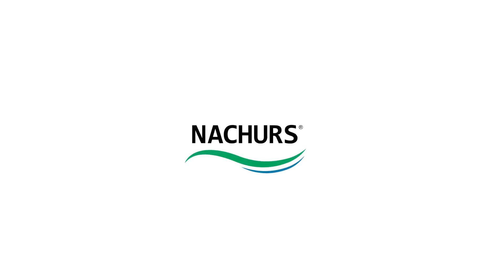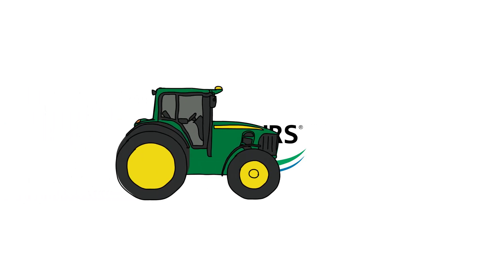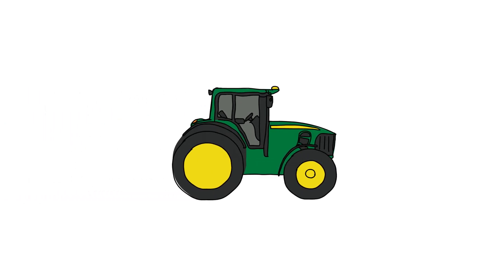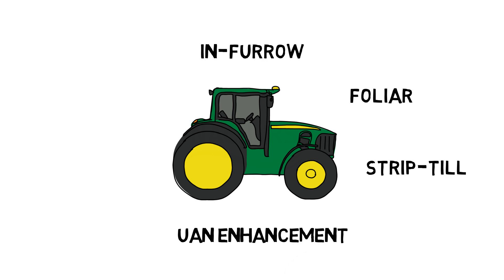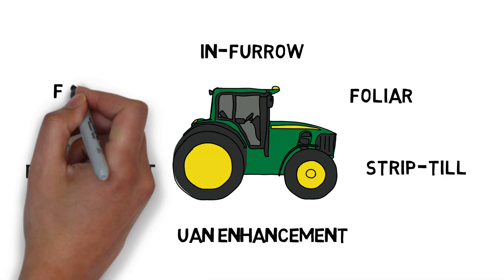All Nature's premium crop nutrition products are formulated with Bio-K and offer a variety of application options, including seed applied, in furrow, foliar, strip till, UAN enhancement, 10-34-0 enhancement, and fertigation.